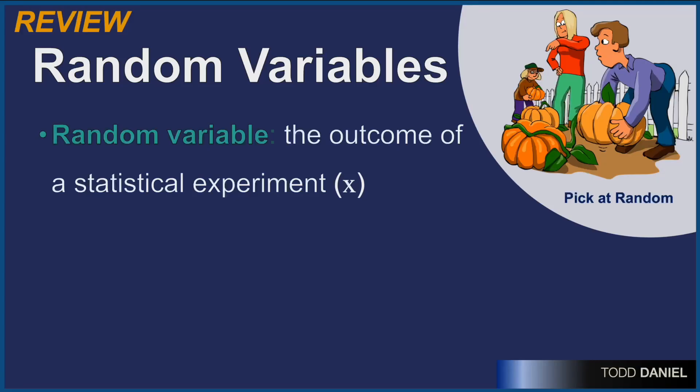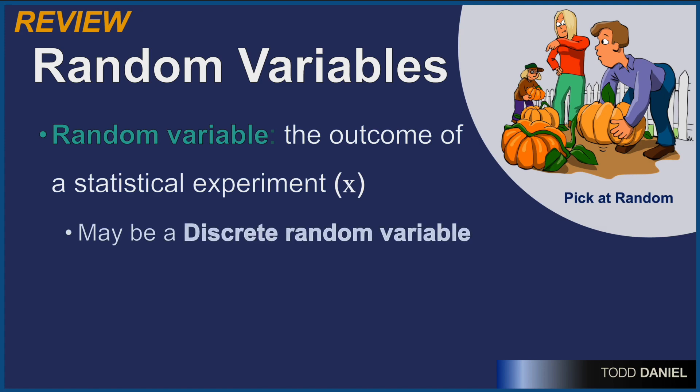Let's review what we've already learned and I'll show you what we're going to do this time. A random variable is an outcome from a statistical experiment, notated as the letter x. This random variable may be discrete, occurring only as whole numbers which cannot have decimals.